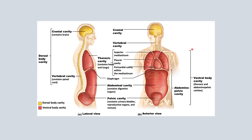The second main body cavity is the ventral body cavity, which is further divided into the thoracic and the abdominal pelvic cavity. The thoracic cavity will mainly contain the heart and the lungs. Looking at the lateral view, we cannot see the rest of the subdivisions of the thoracic cavity — we'll be able to see those details more on the interior view.